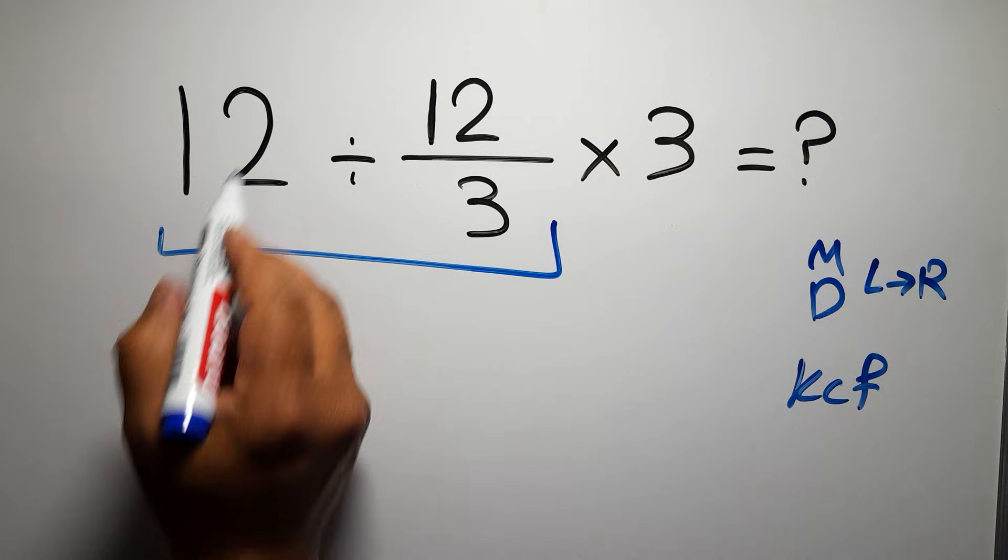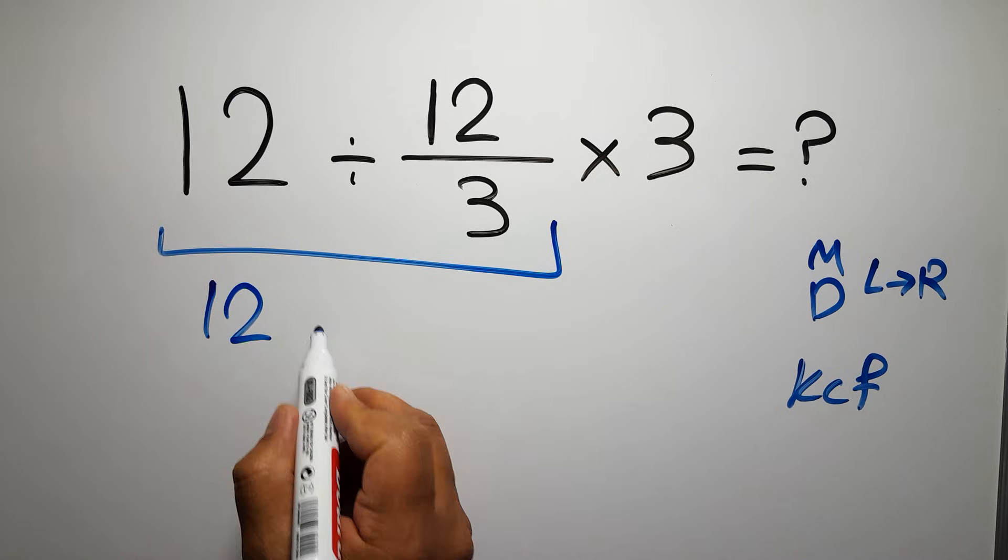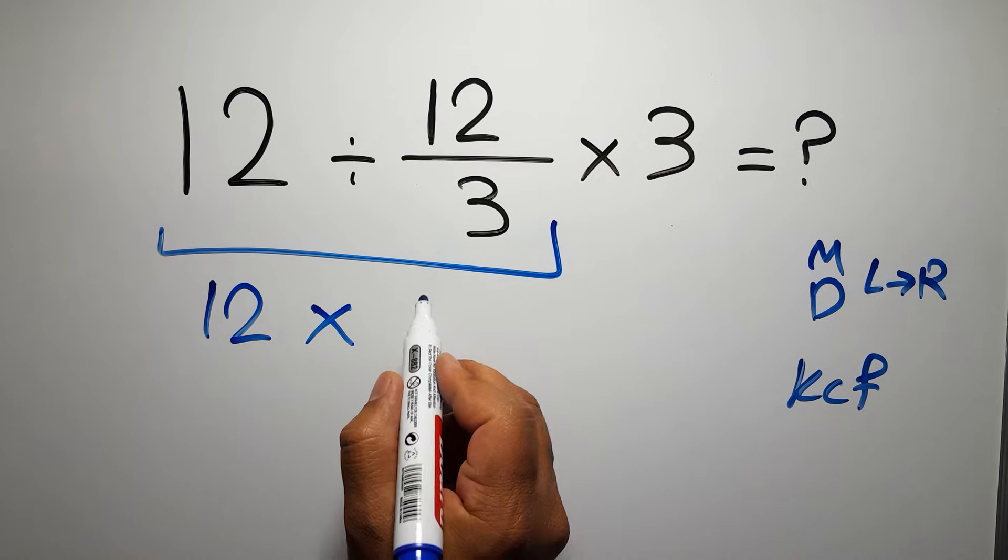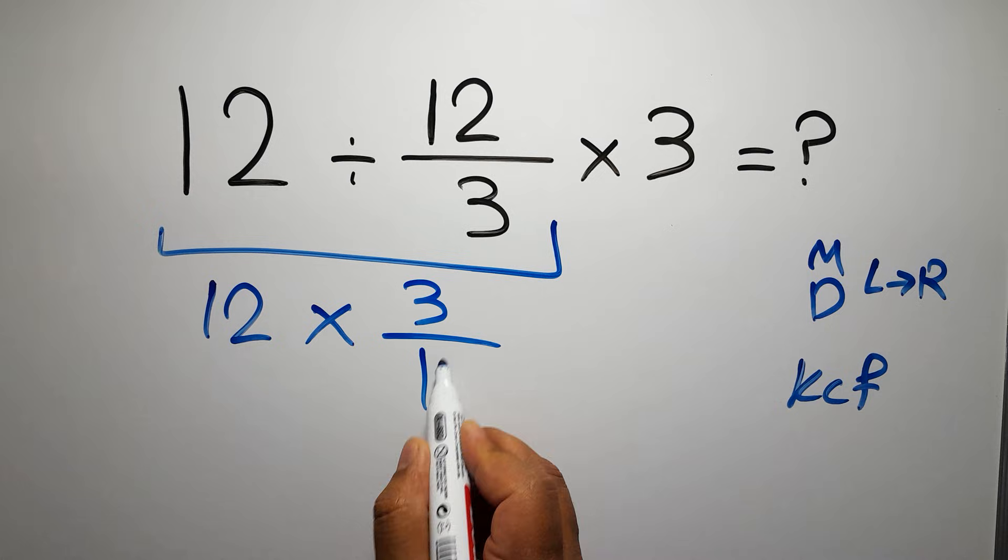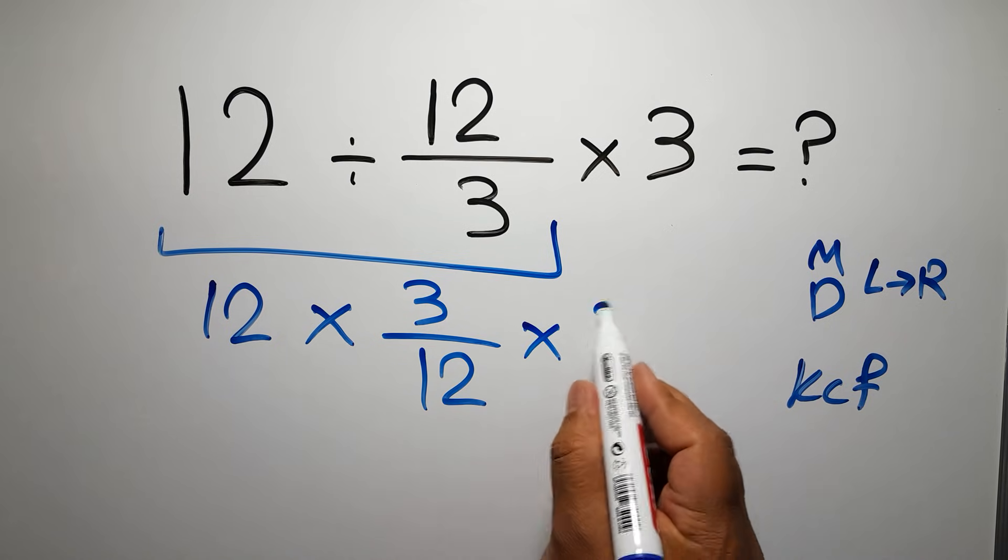We can write keep the first fraction, change division to multiplication, and flip the second fraction. So we have 12 times 3 over 12, then times 3.